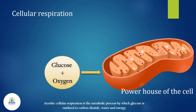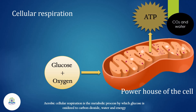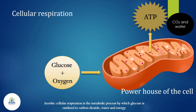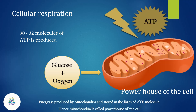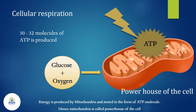30 to 32 molecules of ATP are produced from the oxidation of one glucose molecule. Energy is produced by mitochondria and stored in the form of ATP molecules, hence mitochondria is called the powerhouse of the cell.